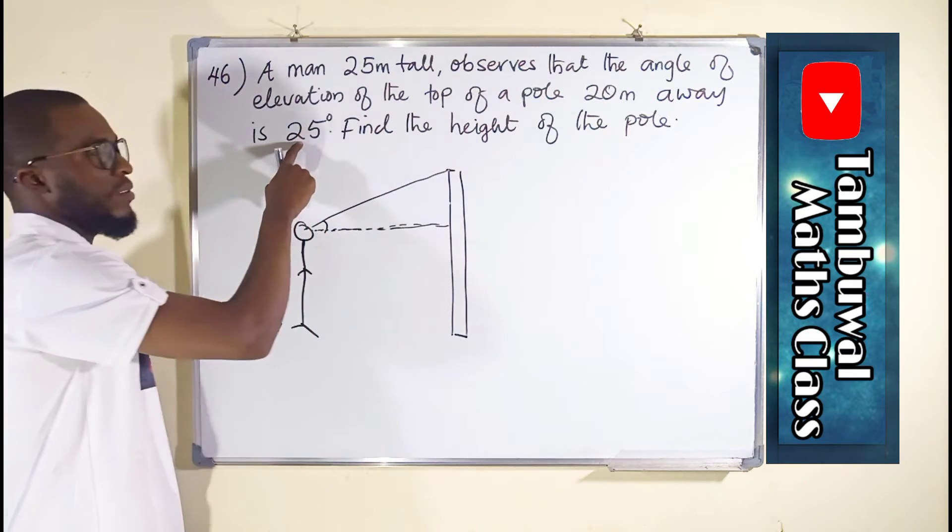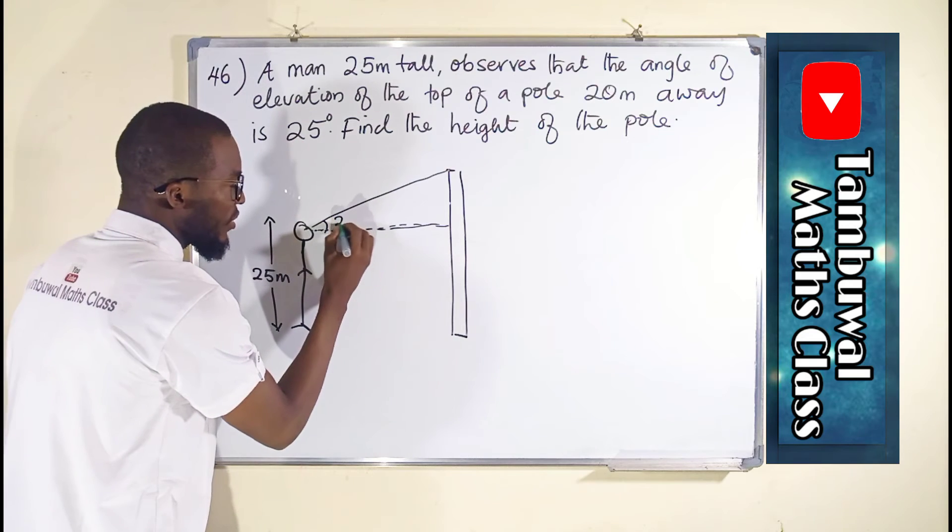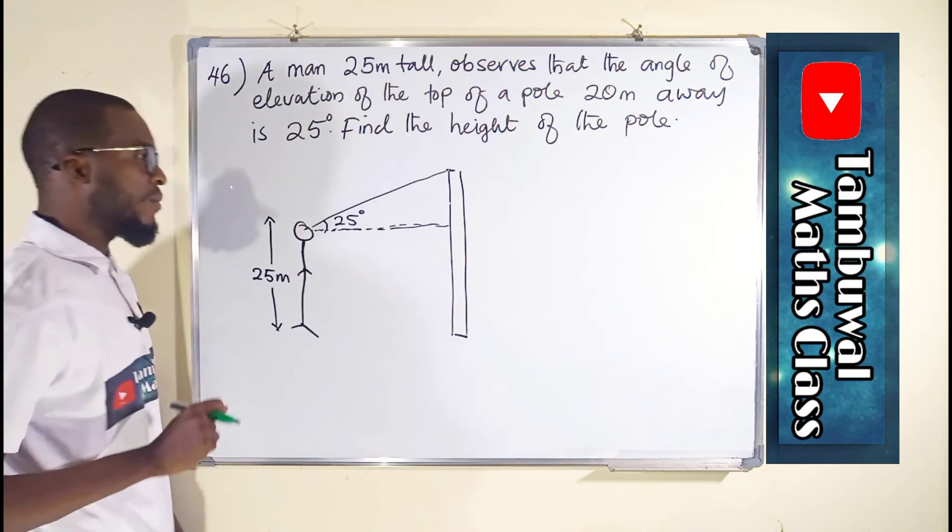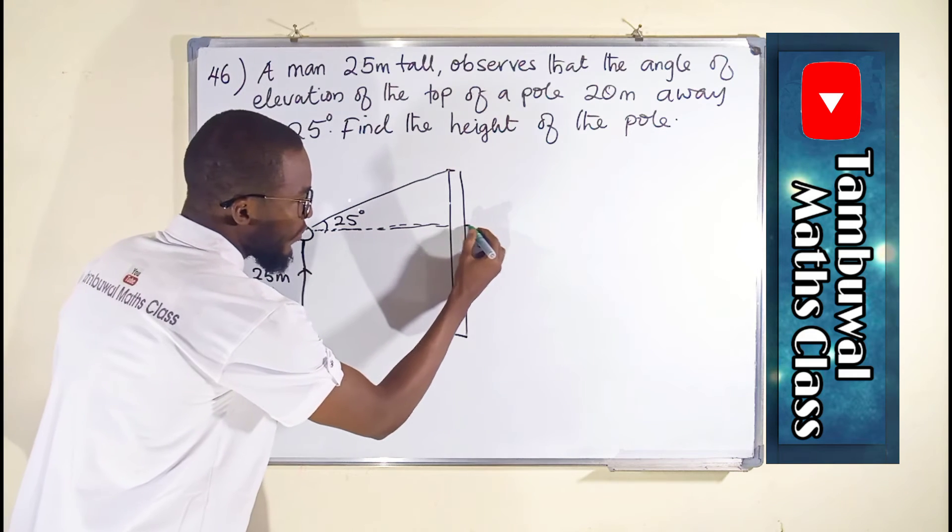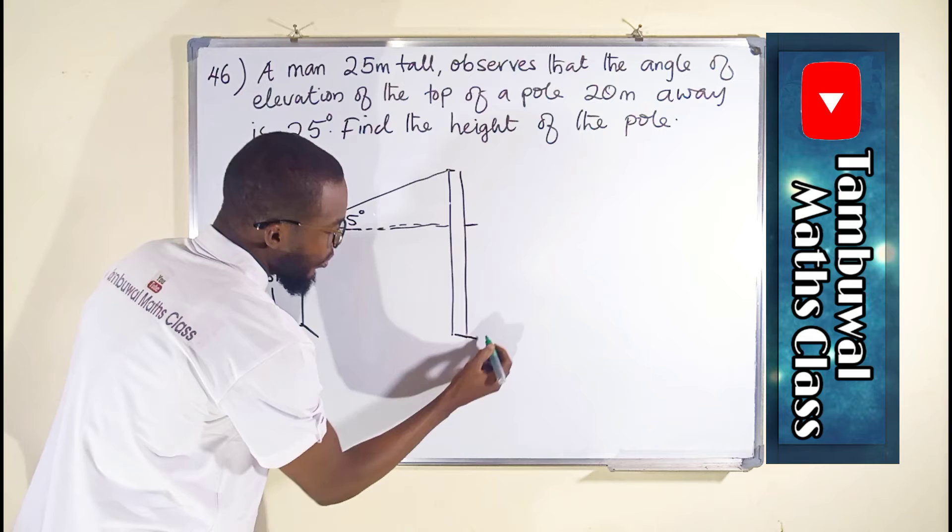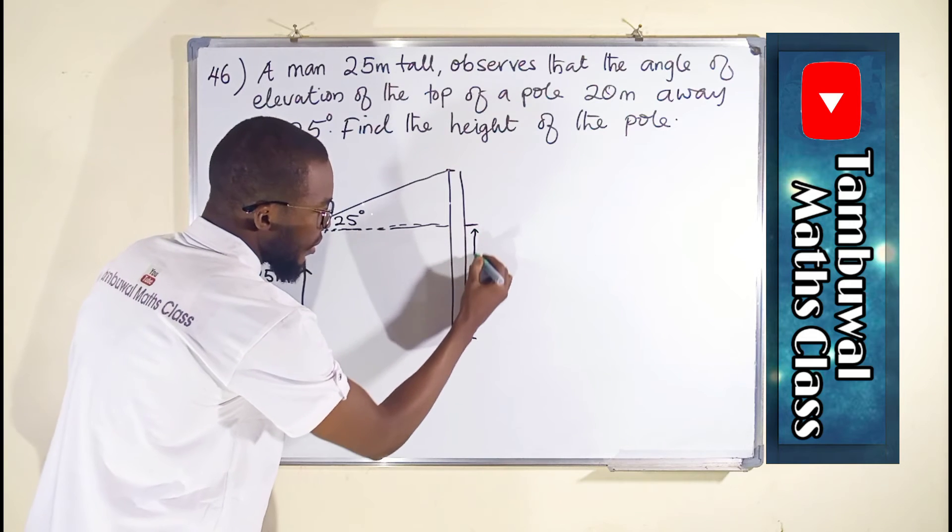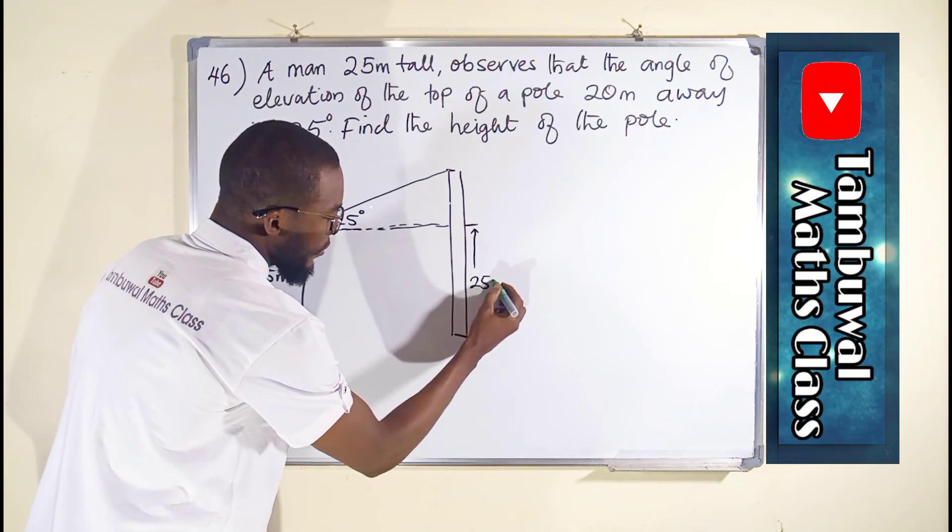From the question, it says it's 25 degrees. This is 25 degrees. So if this man's height is 25 meters, definitely this pole, from this point to this point, it will also be 25 meters.